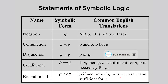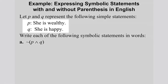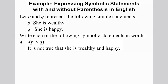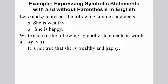For the biconditional statement, the symbol means 'if and only if,' or 'necessary and sufficient.' Now let's consider how we could represent symbolic statements in words. Let P represent the statement 'she is wealthy' and Q the statement 'she is happy.' If we write the symbolic statement 'not (P and Q)' in words, this will be written as 'it is not true that she is wealthy and happy.'